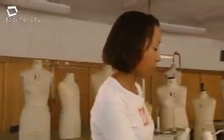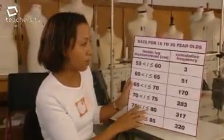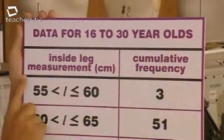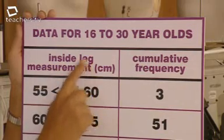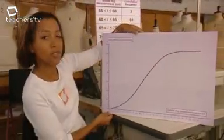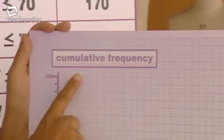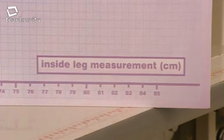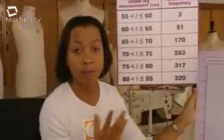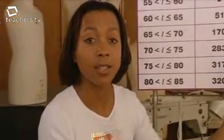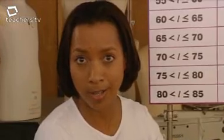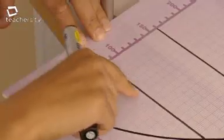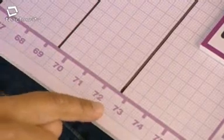I've used Sue's data to create this cumulative frequency table. I've only used measurements for 16- to 30-year-olds, and the single measurement I'm looking at is inside leg. When I plot this data I get a cumulative frequency graph. Remember, cumulative frequency always goes on the vertical axis and the measurement always goes on the horizontal axis. Now for some analysis — the three vital statistics we can estimate are the median, the lower quartile, and the upper quartile. The median is 69.5, the lower quartile is 66.2, and the upper quartile is 72.7.